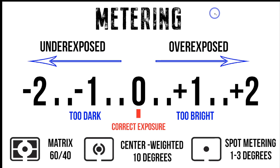This is our meter inside of our camera. If you look at your viewfinder or sometimes on the back of an LCD, you're going to see some numbers like this — a zero, a minus one, a minus two, a plus one, and a plus two. In between, we have some little ticks. These little ticks stand for a third of stops, so this would be plus one third and this would be minus one third.